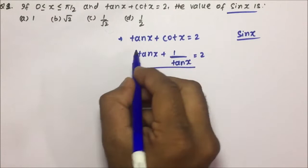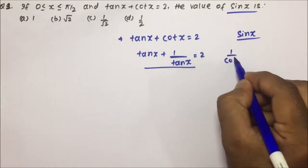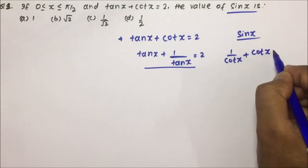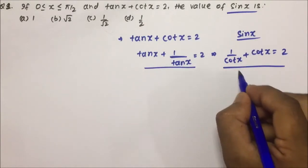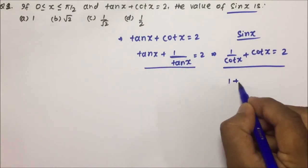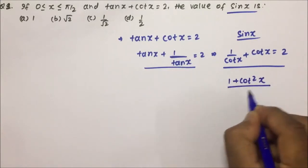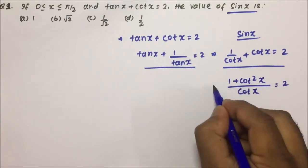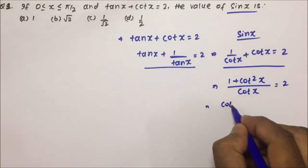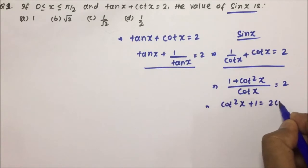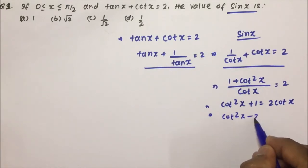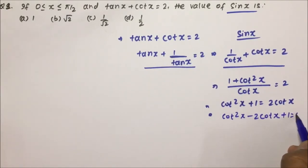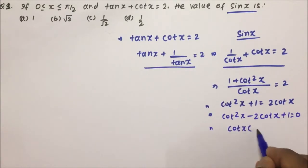What you can do is write tan x as 1 by cot x, so 1 by cot x plus cot x equals 2. If we take LCM, then 1 plus cot² x divided by cot x equals 2. So cot² x plus 1 equals 2 cot x. Rearranging: cot² x minus 2 cot x plus 1 equals 0.